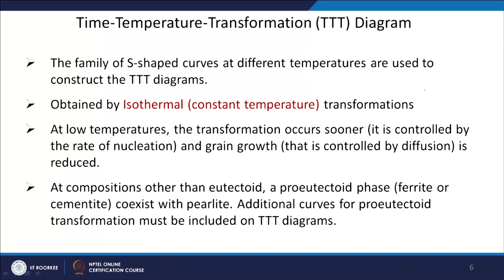From the austenite phase you come to some temperature where austenite is not stable, hold at that temperature for a long time, and you will have transformation during this process. At low temperatures the transformation occurs sooner; it is controlled by the rate of nucleation. When you go to very low temperatures, as discussed during nucleation and growth, your driving force increases, so the overall transformation rate increases. That is why at large undercooling you have a higher transformation rate and a finer microstructure.